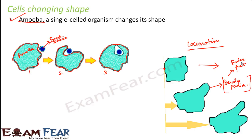Another example of a cell that changes its shape is the white blood cell present in human beings and other organisms as well. These white blood cells also keep changing their shape.